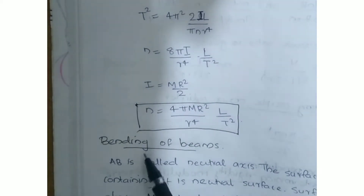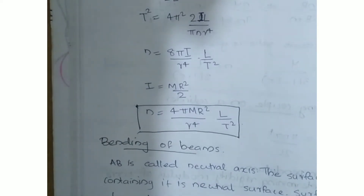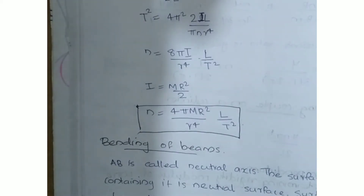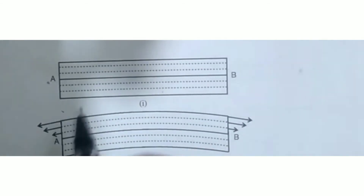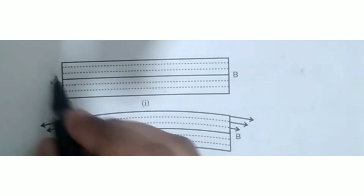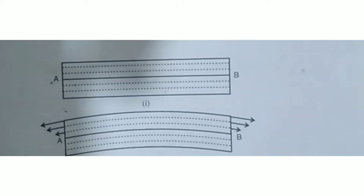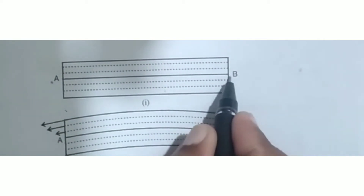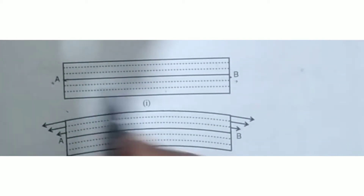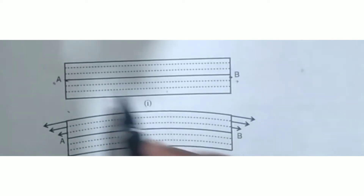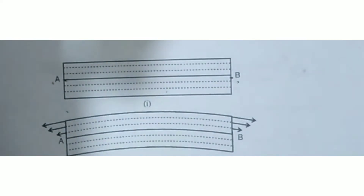Next is the bending of beams. Beams come from construction — buildings, bridges. There is a layer in the center called AB, and it is called the Neutral Axis. If we have a beam in 2D, we use the neutral axis. The plane containing the neutral axis is called the Neutral Surface.